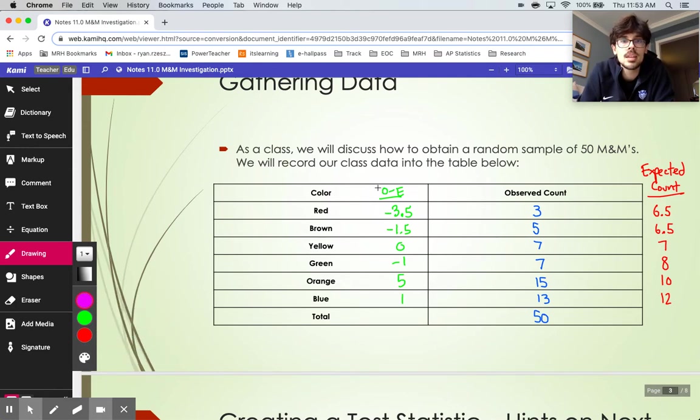So we're going to take each of these guys right here and we're going to end up squaring them. And that will make them into positive quantities that won't wash each other out. So a 3.5 squared is 12.25. We got a 1.5 squared, 2.25, 0, 1, 25, and 1.